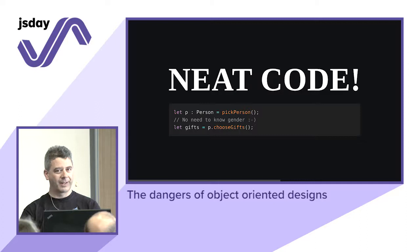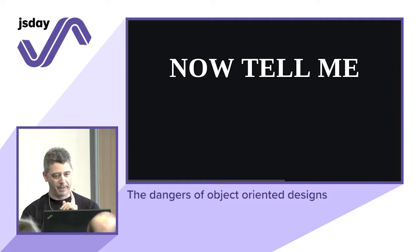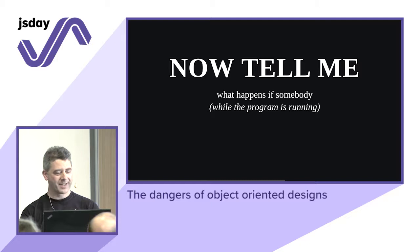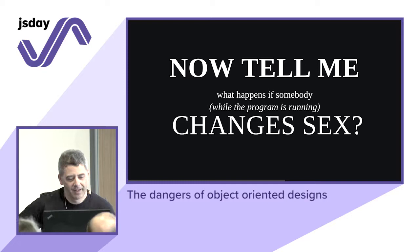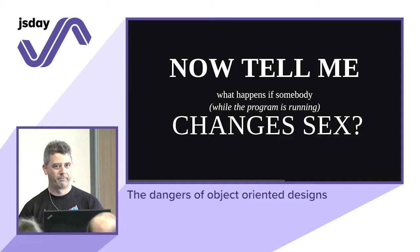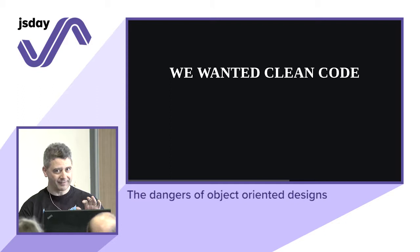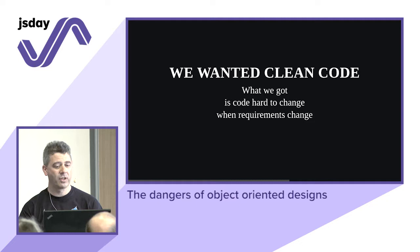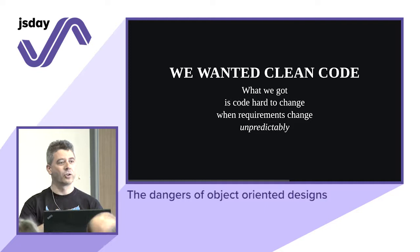But tell me: what happens if a person, while the program is running, changes sex? We had expectations on the shape of the state and the categorization, but this is not set in stone. We wanted clean code, and the code looked clean — but what we got is code that is very hard to change when requirements change unpredictably. We weren't thinking about people changing sex when we built that hierarchy, but in our world this actually happens.